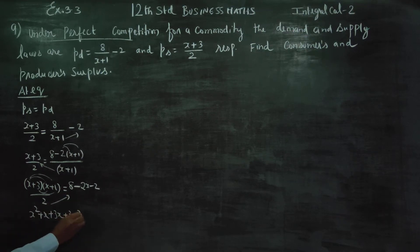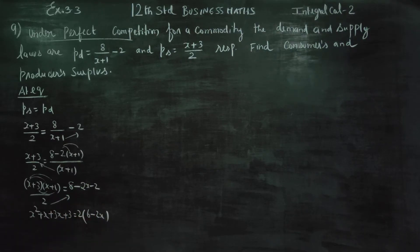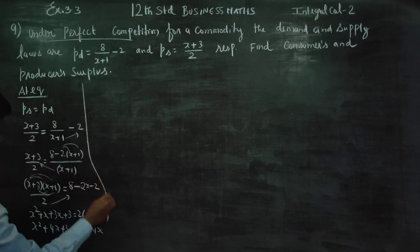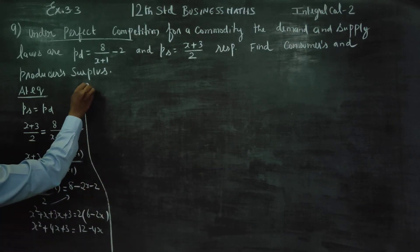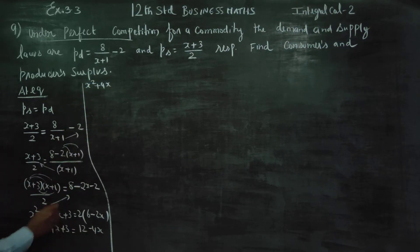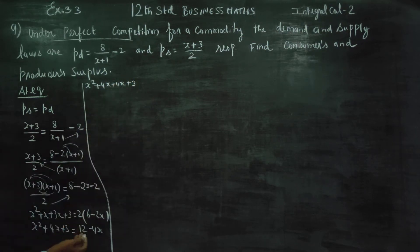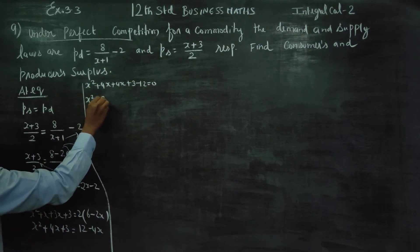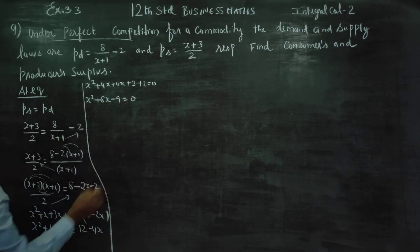8 minus 2 is 6 minus 2x. Now x² plus 3x plus x is 4x plus 3. Bringing all terms to one side: x² plus 8x minus 9 is equal to 0.